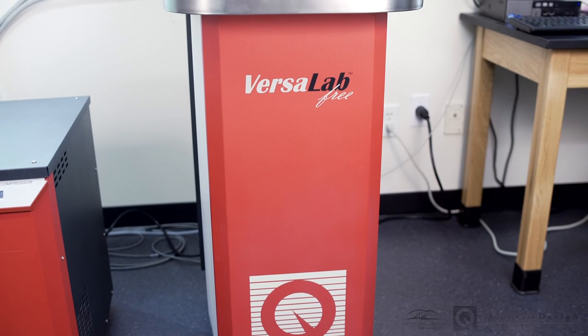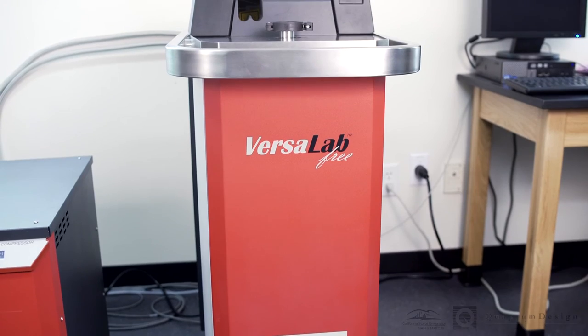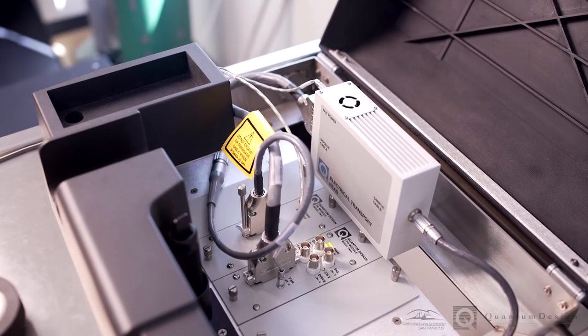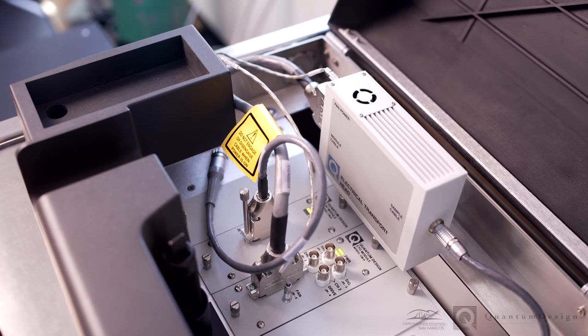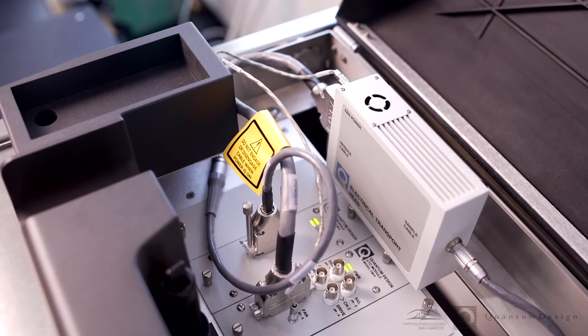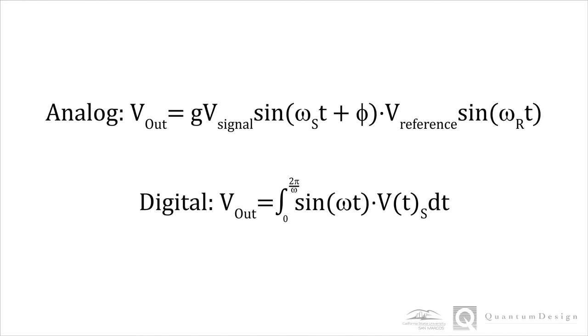Before we perform a measurement with the ETO, we should note that our previous discussion has been about the analog lock-in technique. The VersaLab ETO performs measurements using a digital lock-in technique controlled by the module's digital signal processor, or DSP. Instead of a mixer in a digital lock-in amplifier, the input signal is integrated with a digitally created reference sine wave over one cycle in order to obtain the lock-in result. This has the advantage of being so accurate as to not have the extra harmonics that can be present in an analog reference signal. This output is non-zero if the signal possesses the same frequency as the digital reference.